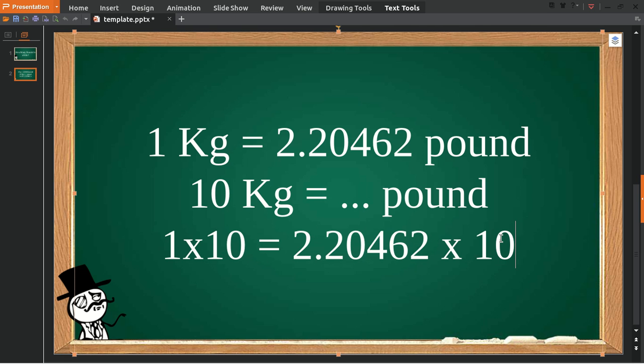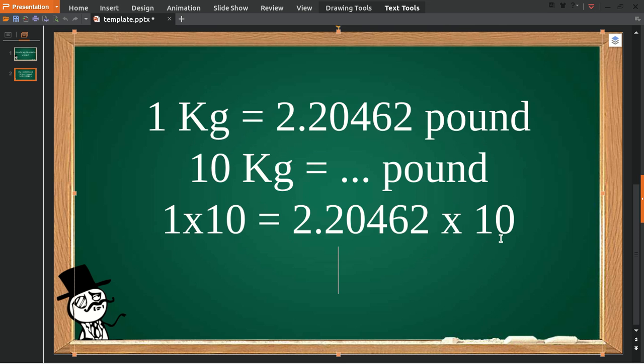So 1 times 10 is equal to 10 kilograms equals to 2.20462 multiply 10 is equal to 22.0462 pound.